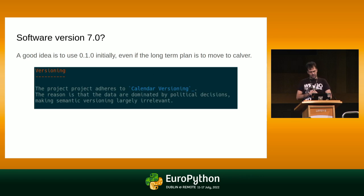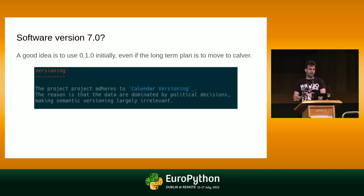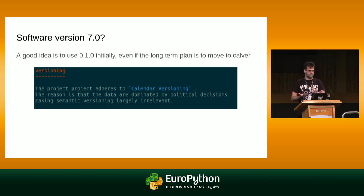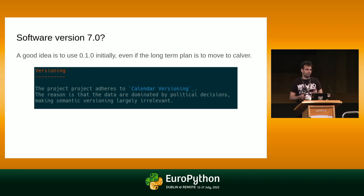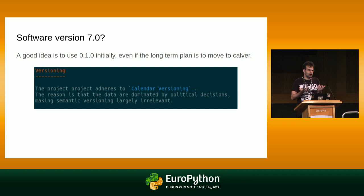Another good idea when you start building a library is to have your first version number be 0.1.0 or 0.0.1 — it doesn't really matter. But start with Semver. If you want to move to calendar versioning later, you can. It's easy to go from 0.1.0 to 22.1.1, but it's very hard to go back from calendar versioning to Semver because it will look like going a version back.